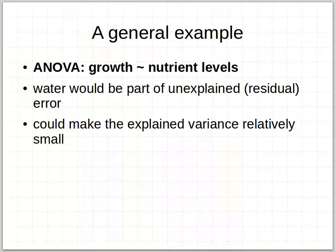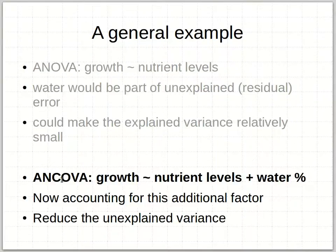The ANOVA would simply be the standard one where we look at growth as a matter of response to those categorical nutrient levels, and water would otherwise just be part of the unexplained residual error. If we had not included it in the model, it would just be contributing to unexplained variation — the residual — which might make the explained variance relatively small and might even make the effects of nutrients marginally non-significant. In an analysis of covariance we add in this extra effect of water content, and now we're accounting for this additional factor, reducing the unexplained variance and separately assigning it a unit of variance in our model.